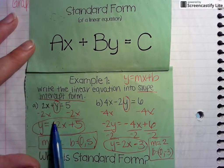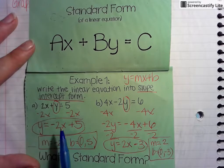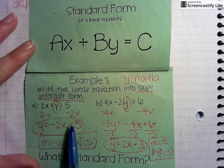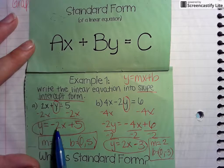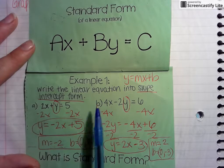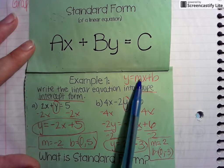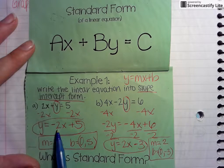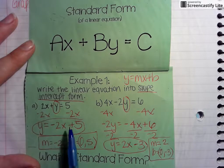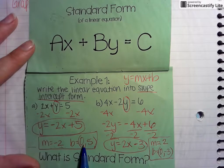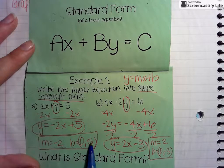You cannot combine these together because they're not like terms, so this would be your final answer: y equals negative 2x plus 5. To identify your slope, it's always your m value, so you have negative 2 as your slope. The y-intercept is always written as (0, 5) — 0 comma that number, which in this case is 5.